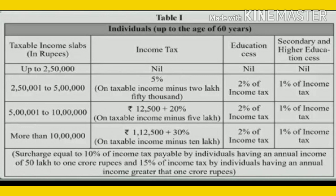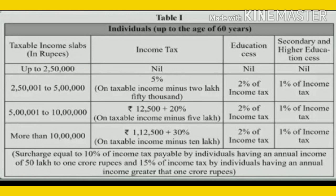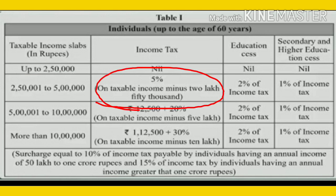Let's study the first table, for individuals up to 60 years. If you are earning yearly up to two lakh fifty thousand, there is no need to pay any tax — that is the exemption. For income from two lakh fifty thousand one to five lakhs, you have to pay five percent tax on taxable income minus two lakh fifty thousand.